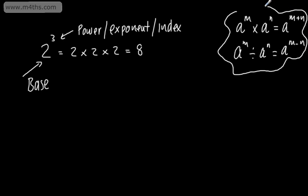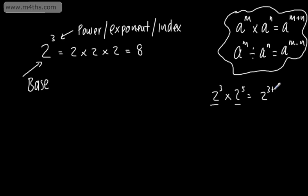So if we had, for example, 2 to the power of 3 multiplied by 2 to the power of 5, instead of writing all of this out, we can simply say that these bases are the same, and write this as 2 to the power of 3 plus 5, which gives us 2 to the power of 8. This saves us writing it all out. If we evaluate this, it gives us 256 — you can check that on a calculator, or if your powers of 2 are strong, you'll find that's 256.